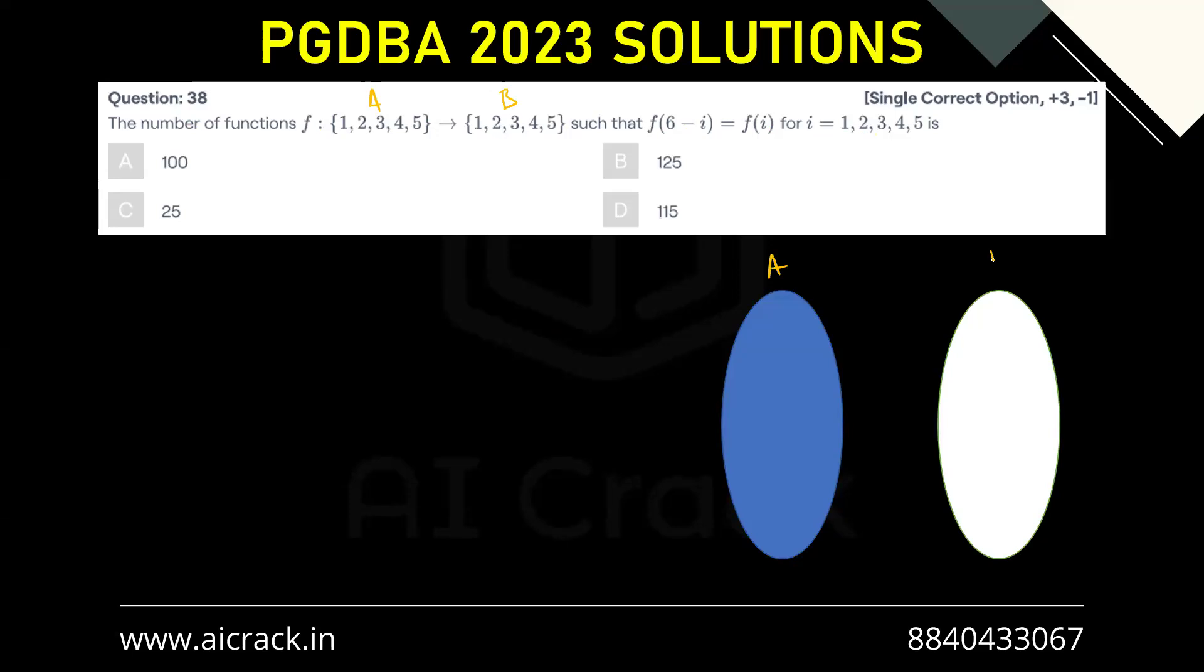Now this is set A, this is set B: 1, 2, 3, 4, and 5 for both. The given equality is f(6-i) equals f(i), right.